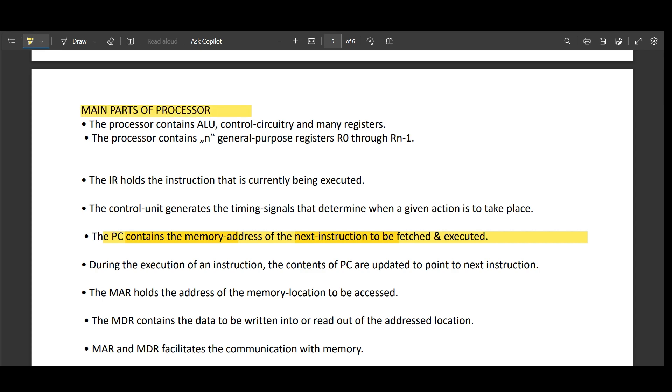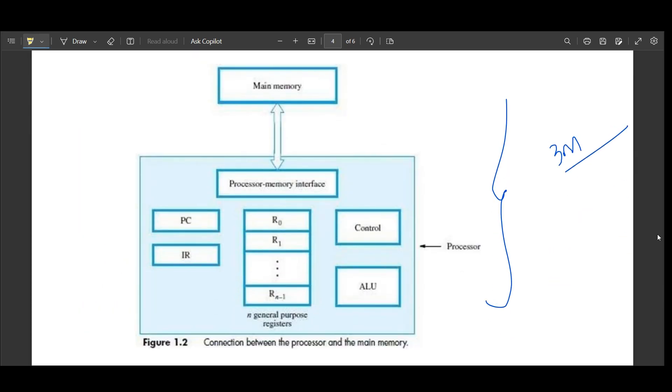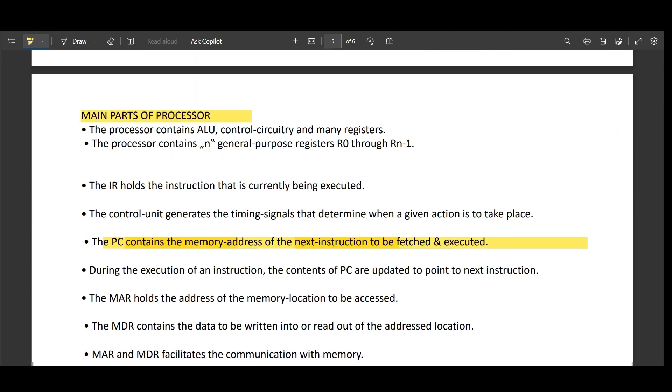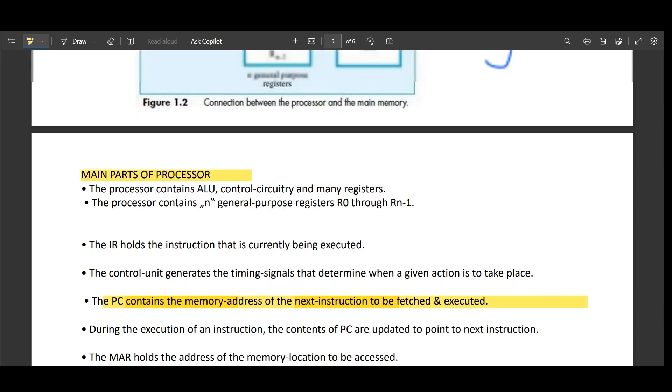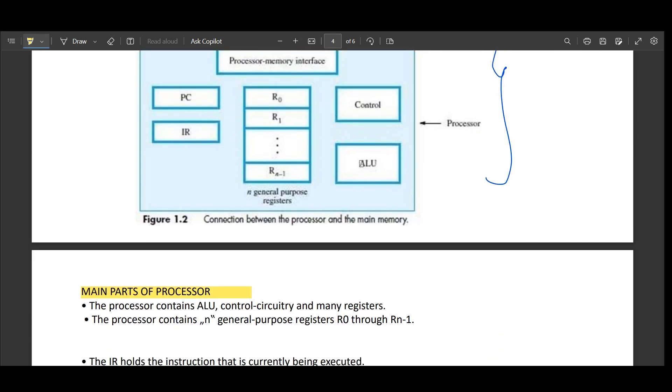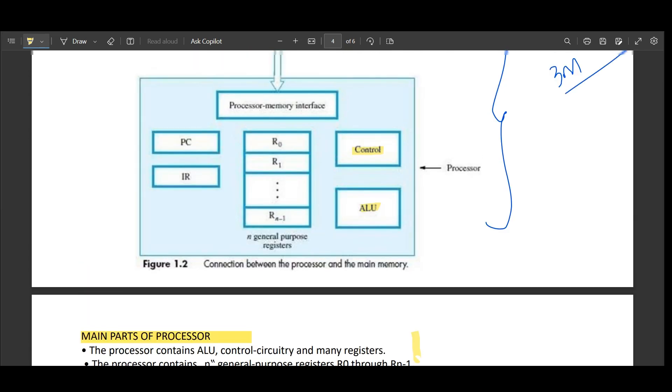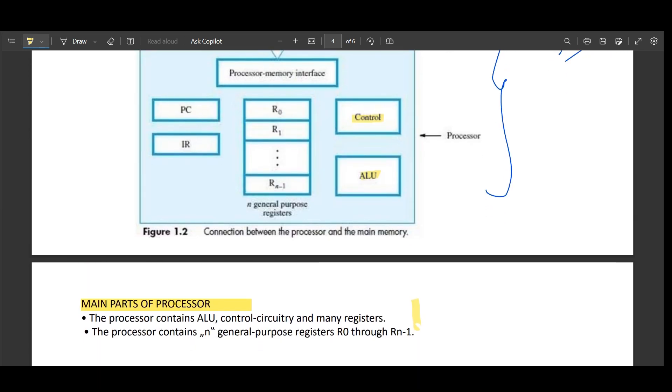We'll start from the beginning so that it will be easy. What are the main parts of the processor? We have two parts here. One is the main memory and other is the processor. First, we'll go through what is processor. Processor, as mentioned in that block, it contains an ALU, controlled circuitry, and many registers. It contains N general purpose registers, that is R0 to RN-1. If you write this, you will get another one mark.